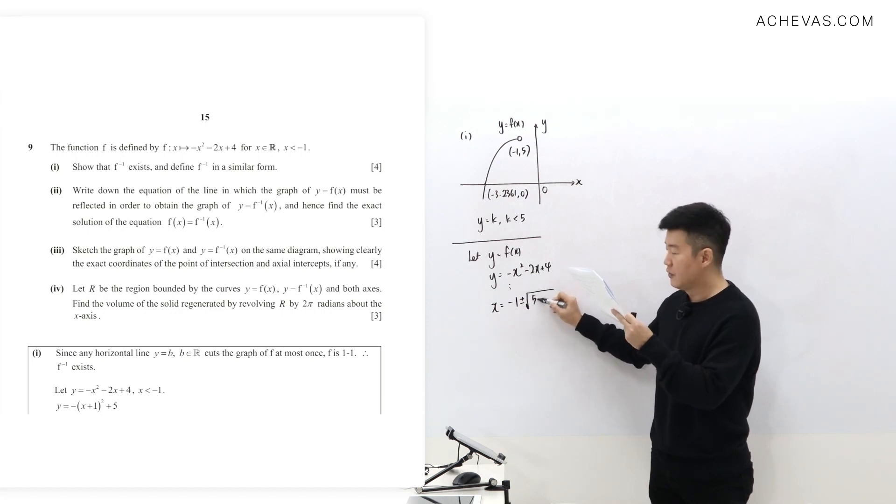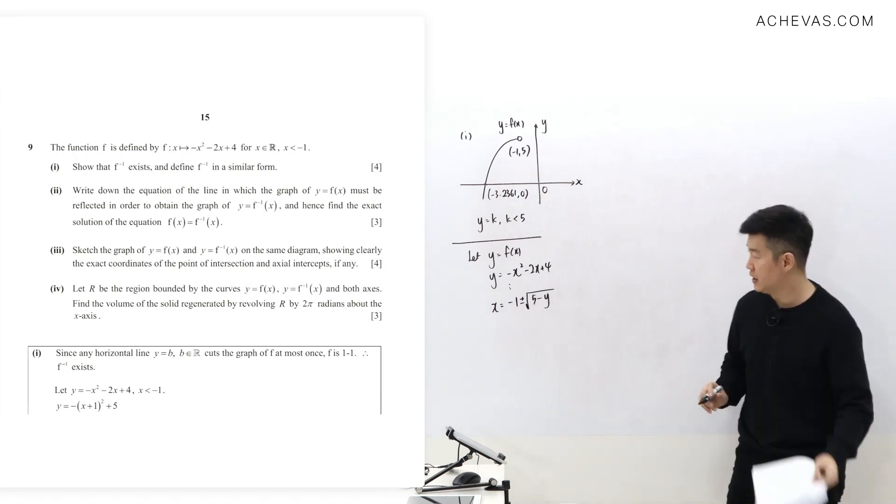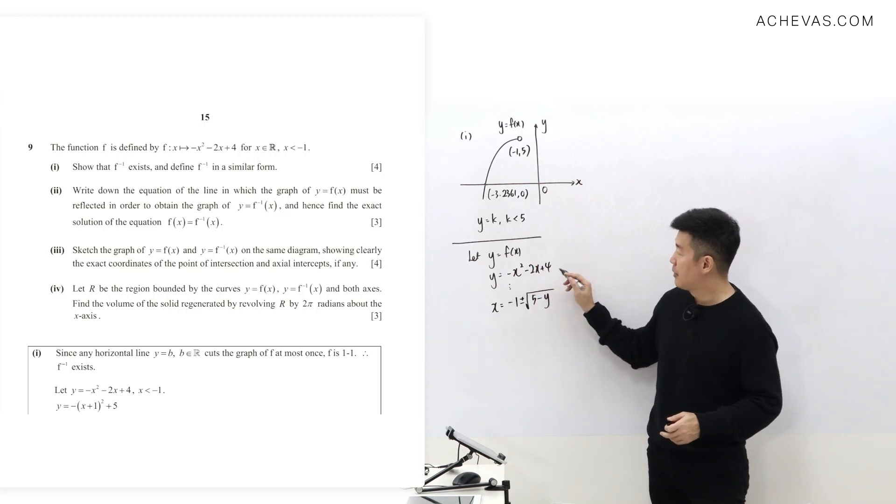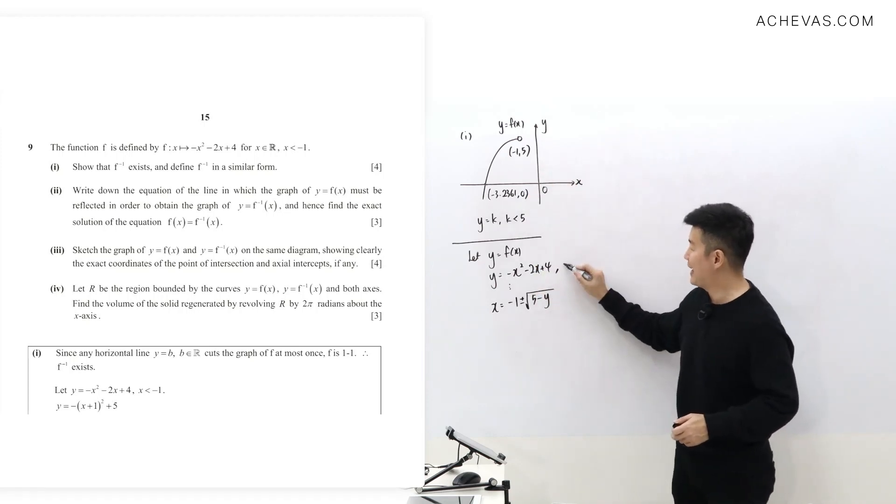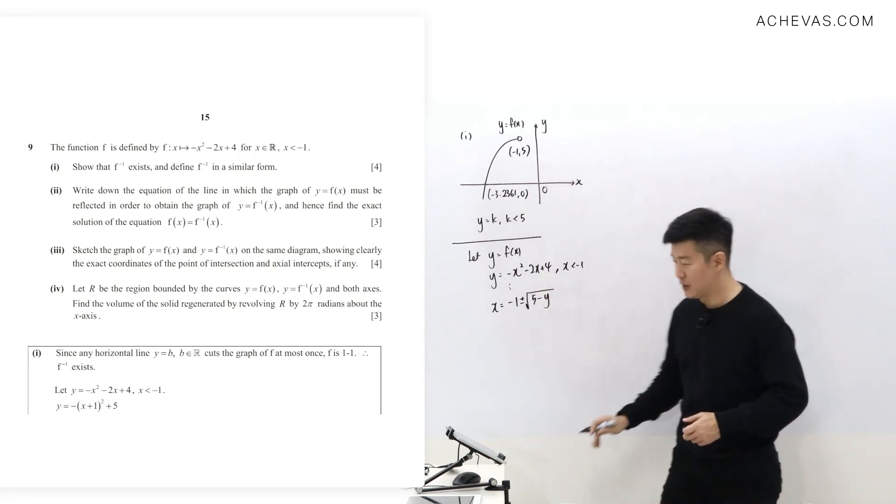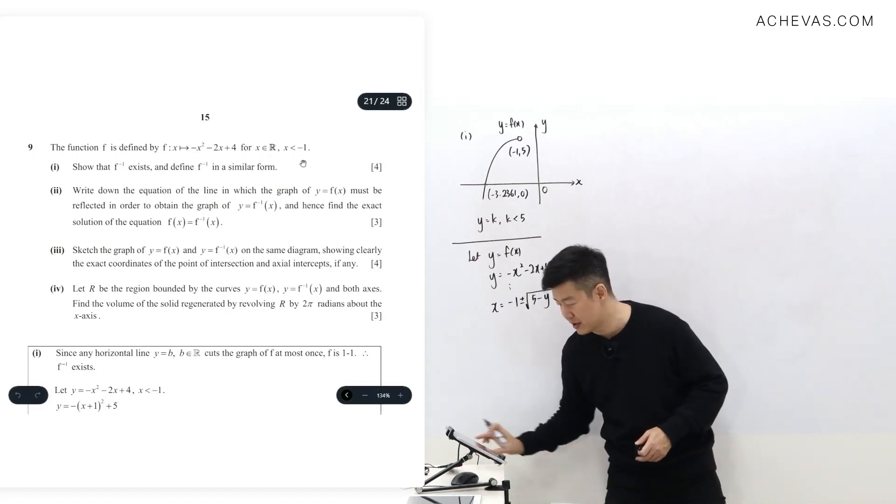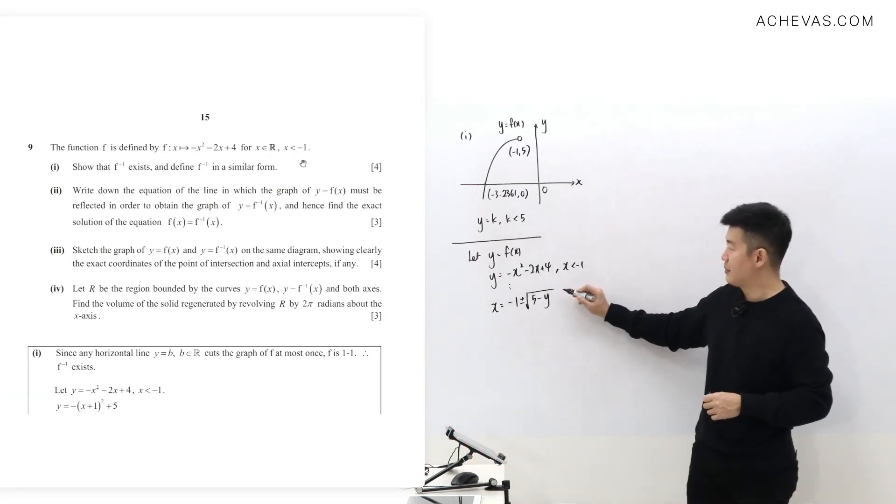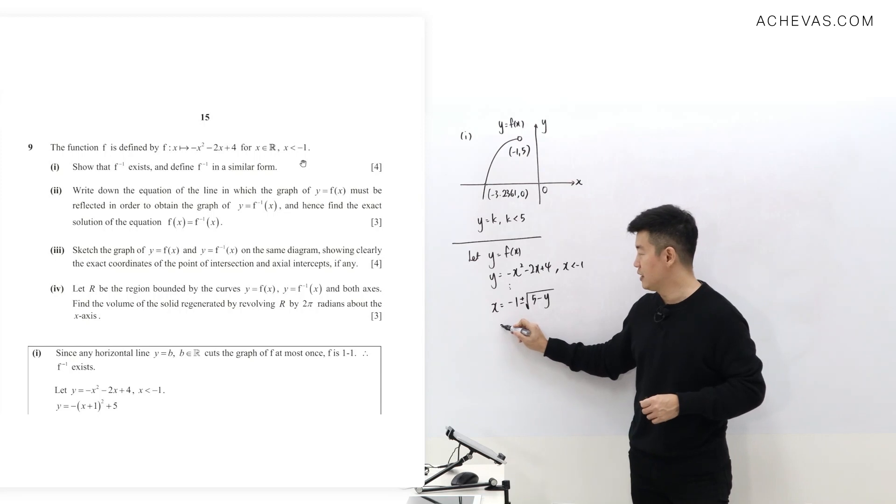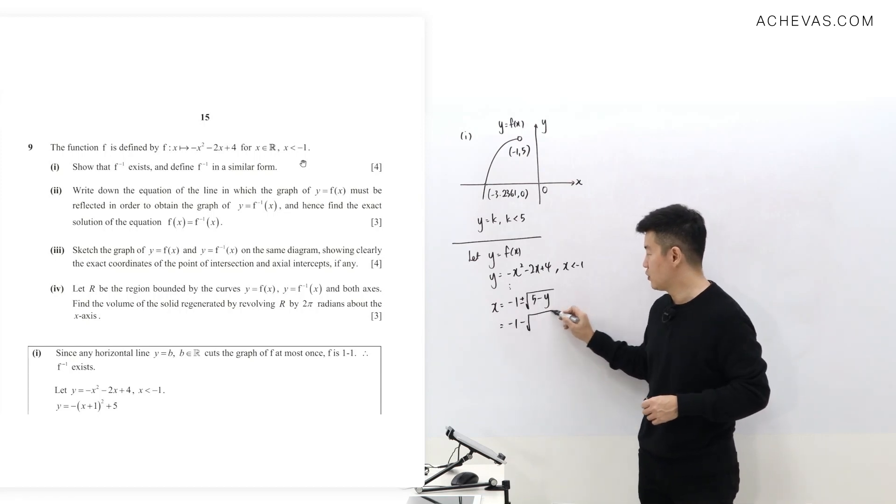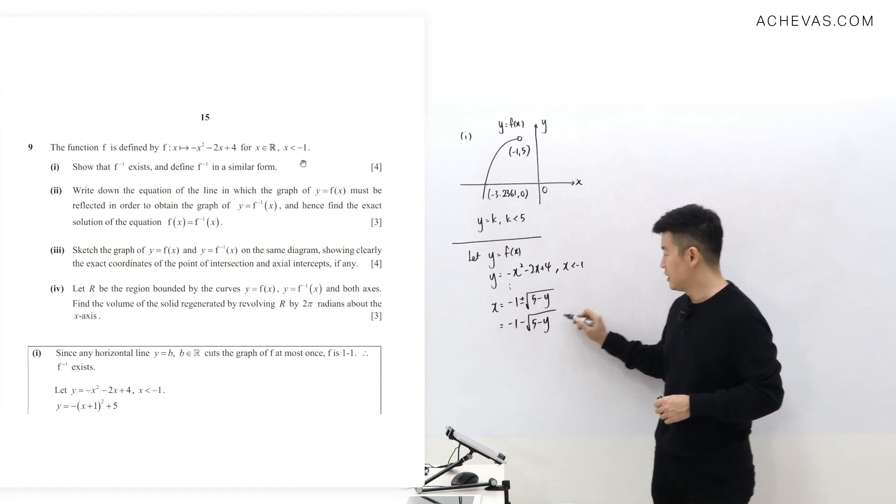Since I'm looking at this where x is supposed to be less than minus 1, this is the domain given by the question. Since x is less than minus 1, I'm going to be choosing it as negative 1 minus square root of 5 minus y.